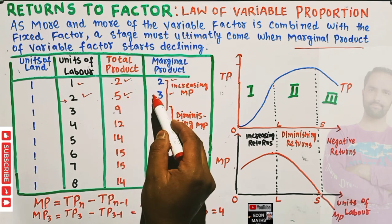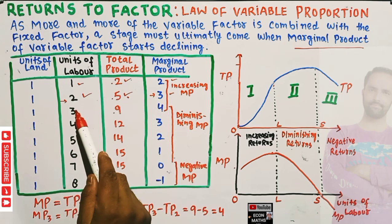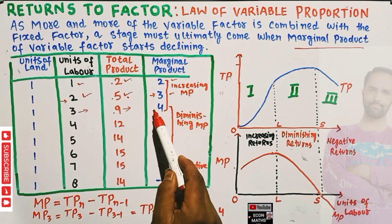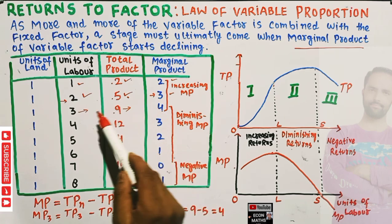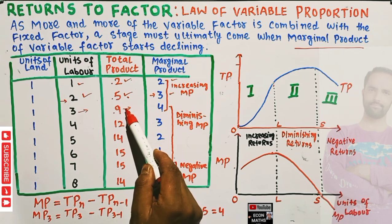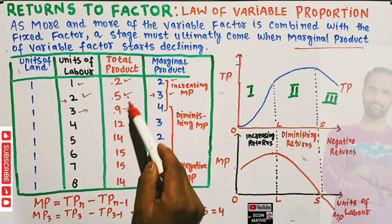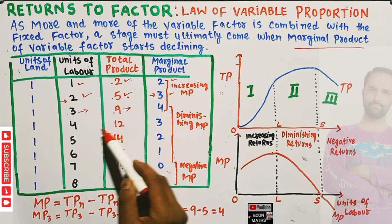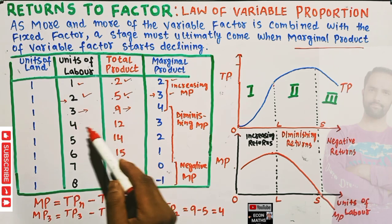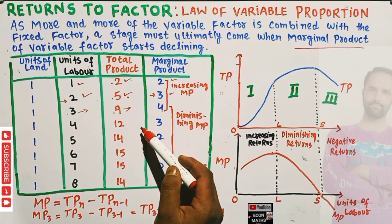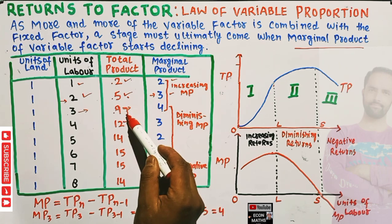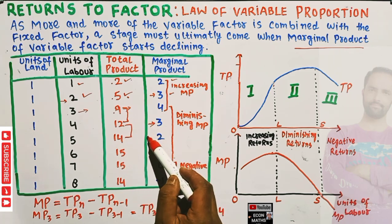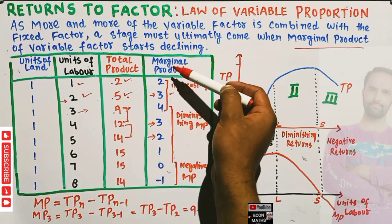Five minus two gives us three. Similarly, when we employ the third labor, our total product increases to nine. The marginal product of the third labor is the total product when we have three units of labor minus the total product when we have two units — nine minus five gives us four. When we employ four laborers, our total product is 12 and marginal product is 12 minus 9, which comes out to be three.